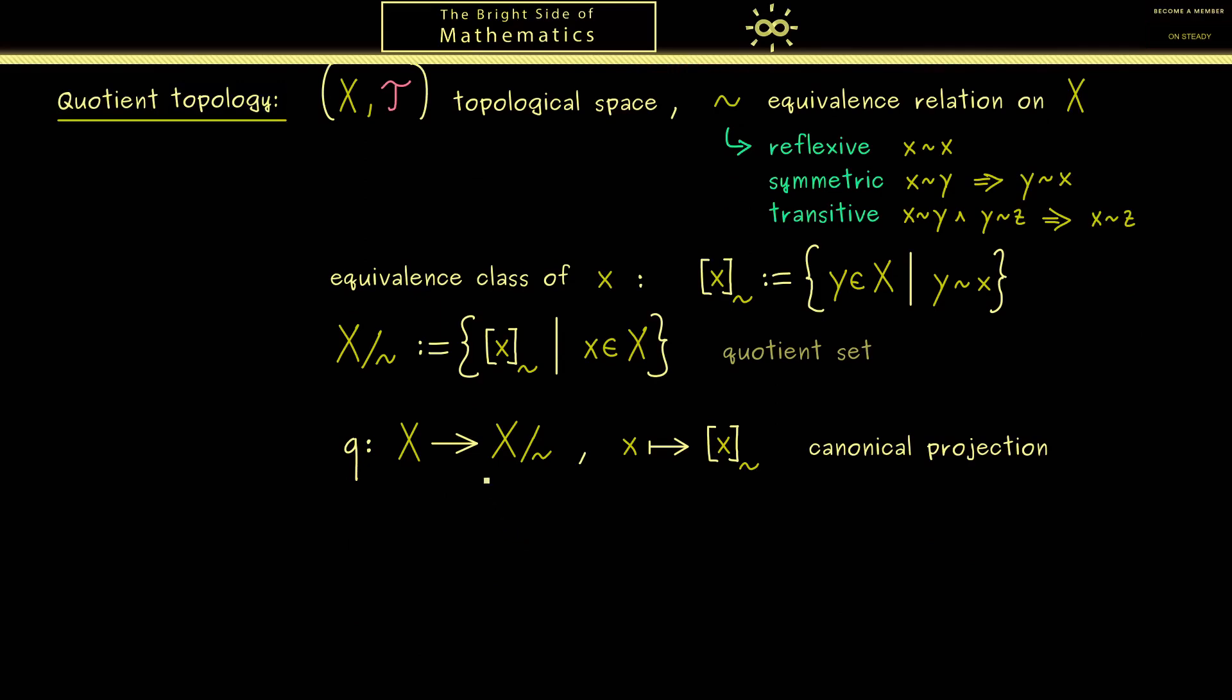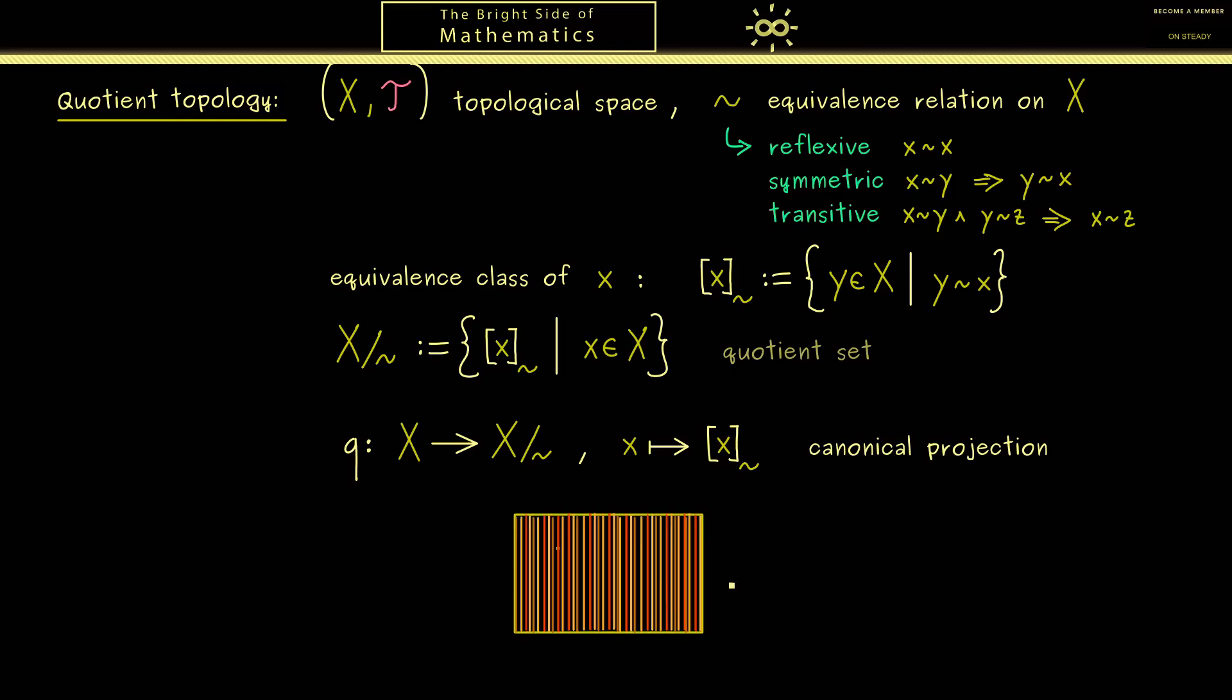And now we are ready to define open sets here on the right hand side. For this it's a good thing to visualize the set X on the left hand side as a rectangle. And now when we take a point x from the set the equivalence class should be the whole vertical line here. In other words here in our picture we decompose the rectangle into vertical lines. We do this because then we can visualize X modulo tilde as a line. This is not hard to see because to get all equivalence classes you just need one horizontal stripe here. Therefore the map q just collapses all the vertical lines here.